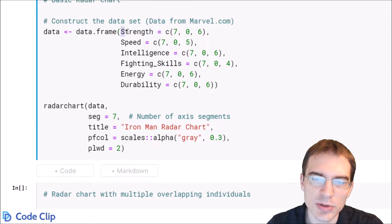For instance here we're saying strength, the max value for the plot is 7 strength, and the min value is 0, and then we're saying Iron Man has 6 strength.